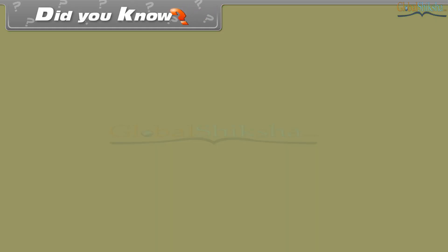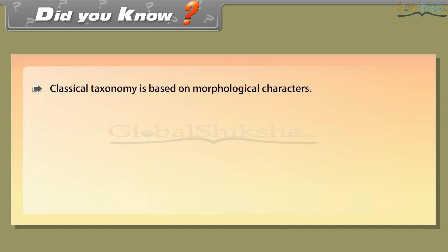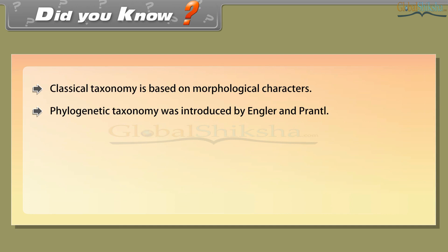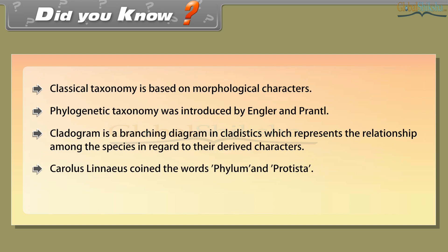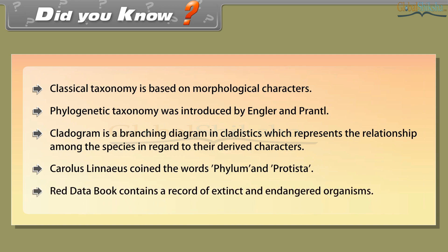Did you know? Classical taxonomy is based on morphological characters. Phylogenetic taxonomy was introduced by Engler and Prantl. A cladogram is a branching diagram in cladistics that represents the relationship among species with regard to their derived characters. Carolus Linnaeus coined the words phylum and Protista. The Red Data Book contains a record of extinct and endangered organisms.